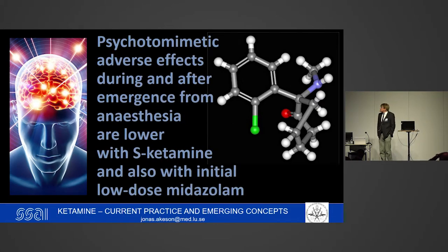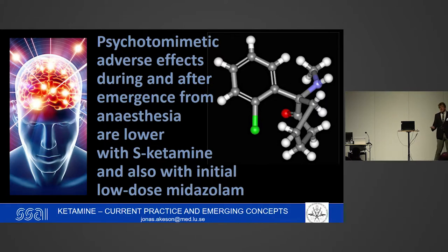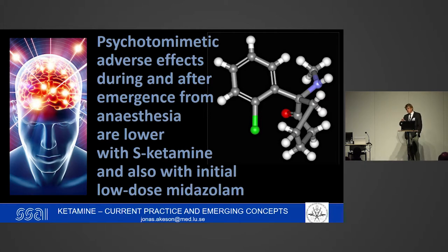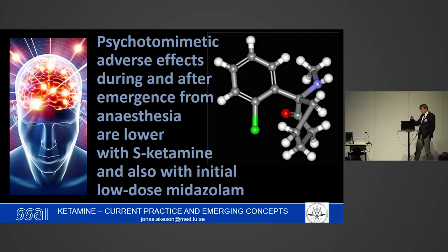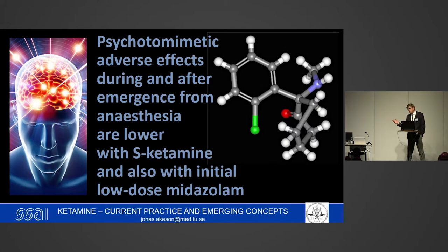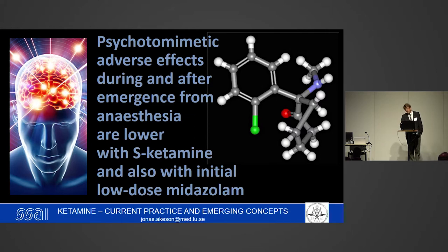Psychotomimetic adverse effects are mainly believed to be related to the R-enantiomer. So if you use S-ketamine (ketanest) and a low dose of midazolam before giving the ketamine, the risk of psychotomimetic effects is believed to be lower. There are also some studies suggesting that the R-ketamine form, or particularly the R-nor-ketamine metabolite, might have a better antidepressive effect than the racemic or S-ketamine. So there might be some connection between psychotomimetic adverse effects and antidepressive action.